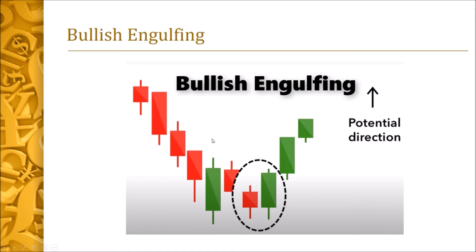We also have the bullish engulfing pattern, which is one of the most favorite candlestick patterns as it works most of the time. It also comes after a series of red candlesticks, followed by a red candlestick with a green candlestick overlapping its close price or its highest price. As you can see, the red candlestick made its high at one point and closed lower, while the green candle opened lower but closed higher than the close of the previous candle. This signifies a potential buy direction.